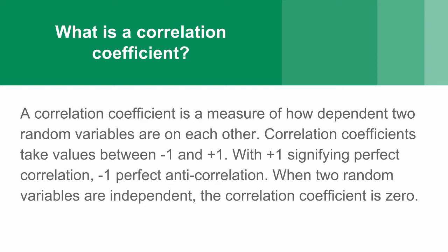Correlation coefficients take values between minus 1 and plus 1, with plus 1 signifying perfect correlation, and minus 1 perfect anticorrelation. They can, of course, take any values in between, and when two random variables are independent, the correlation coefficient is 0.